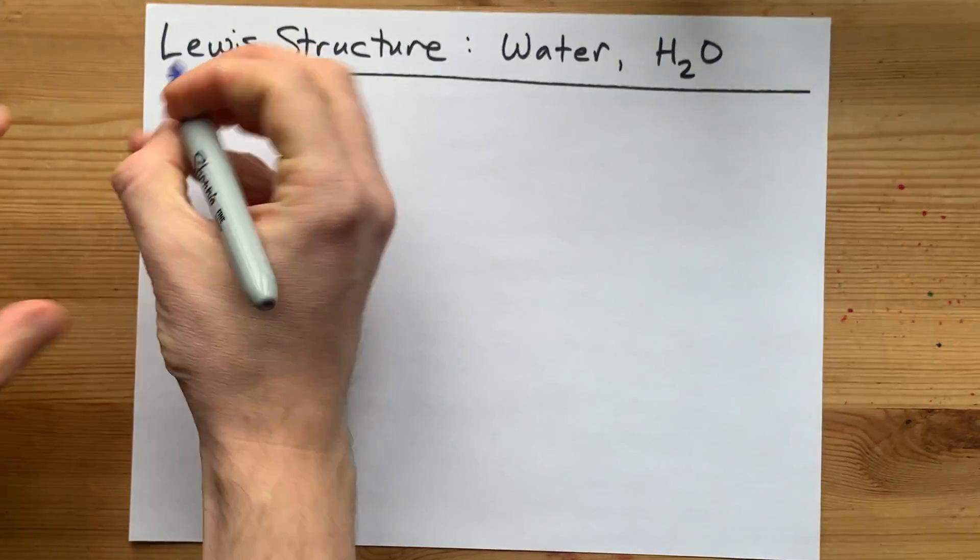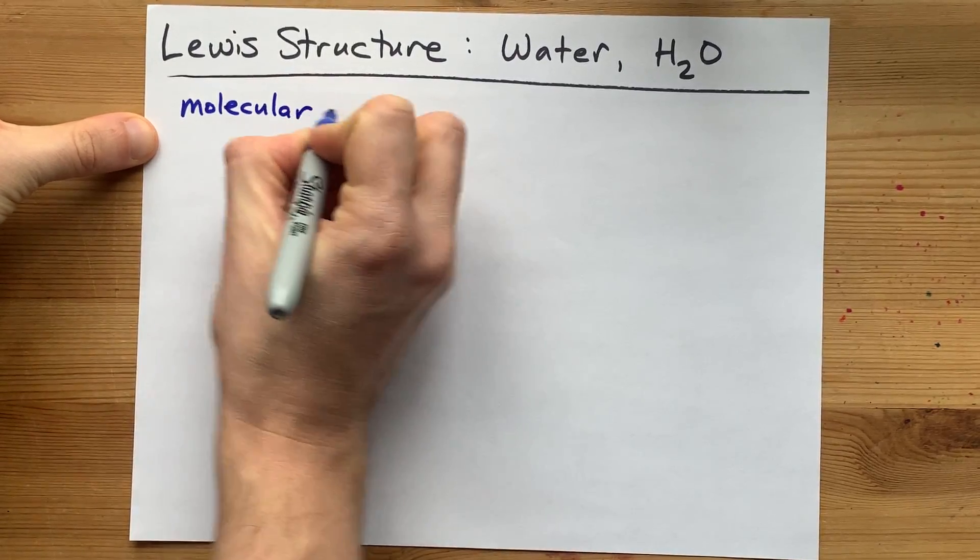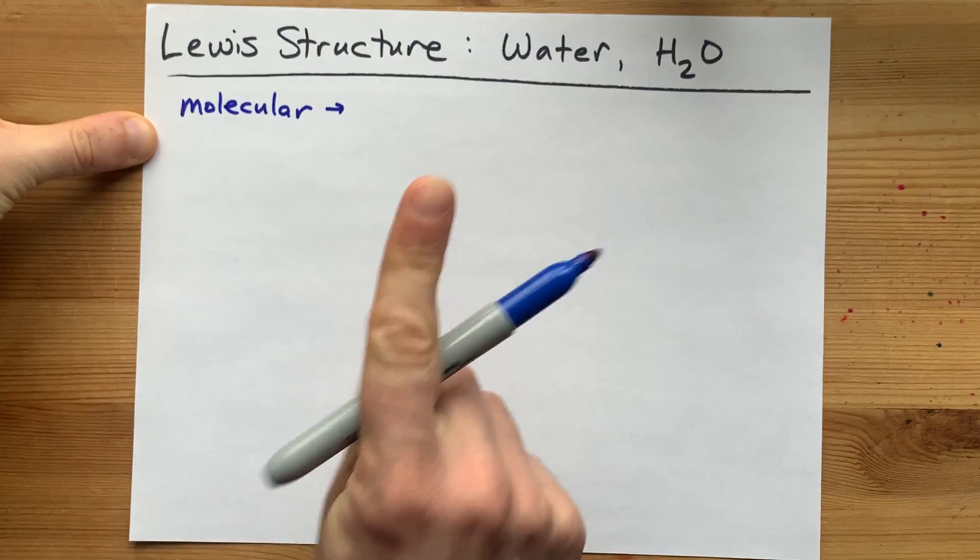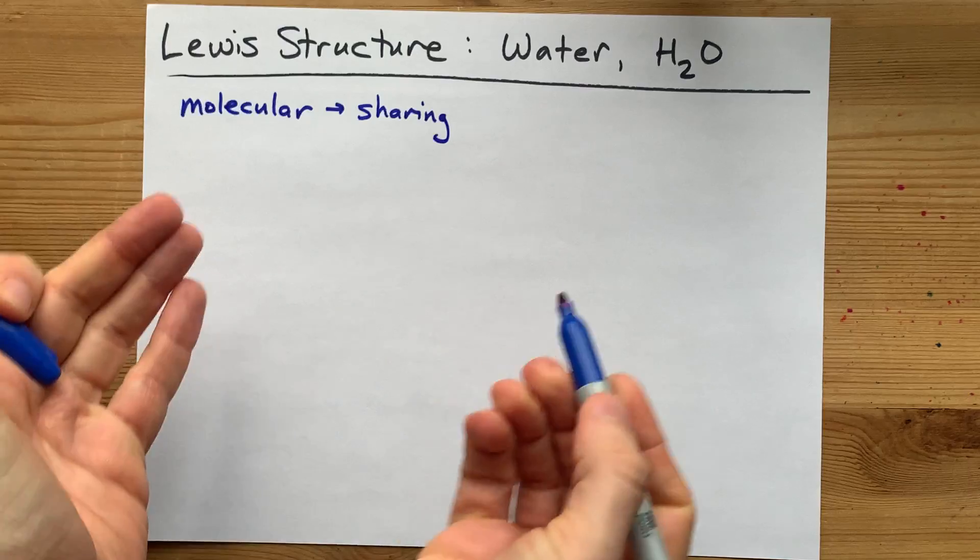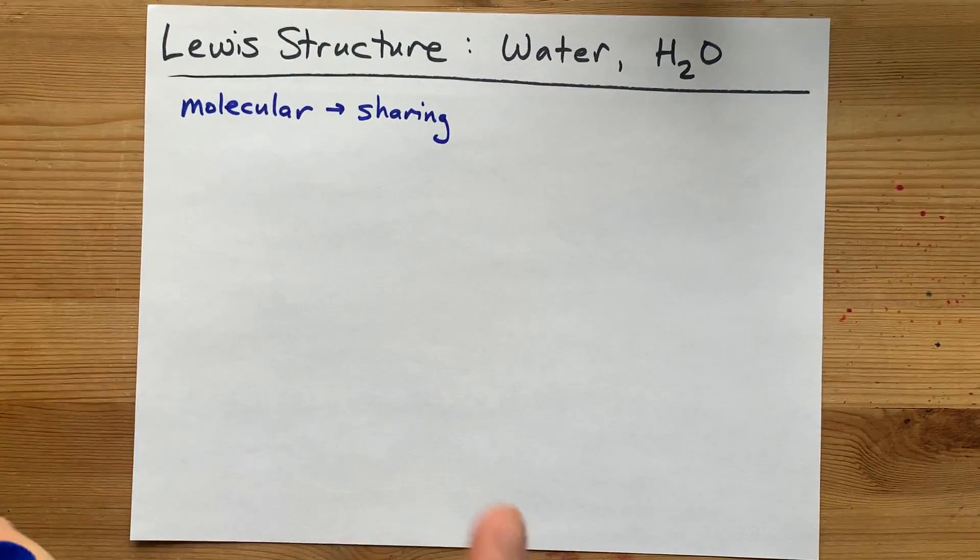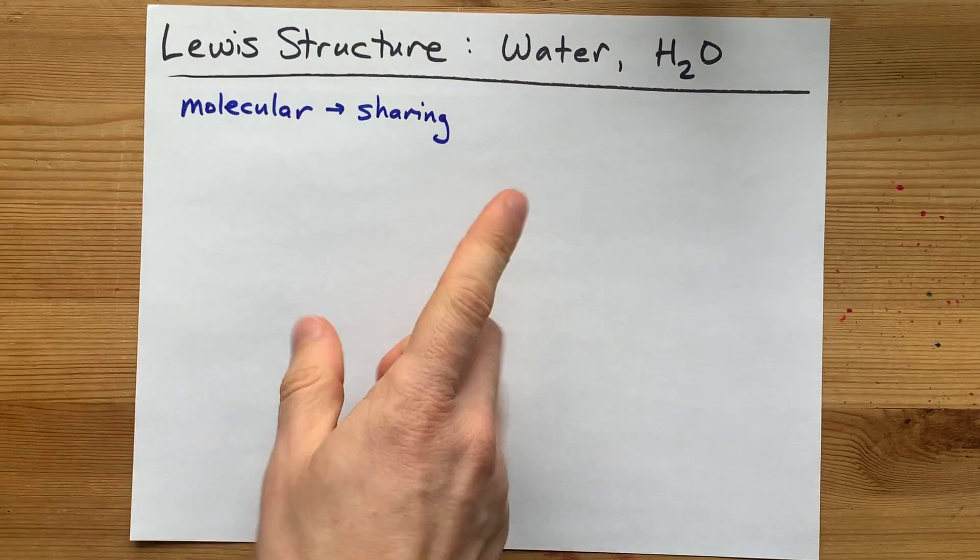That's important because non-metals will combine to make what we call molecular or covalent compounds, and those form by sharing electrons. It's not a transfer from one to the other. They share. Now, to figure out how that sharing happens...